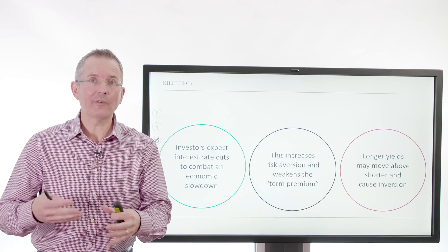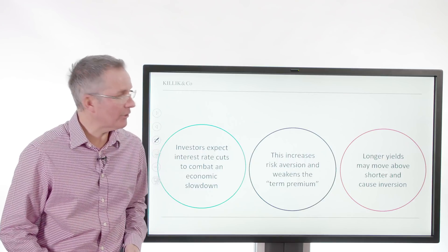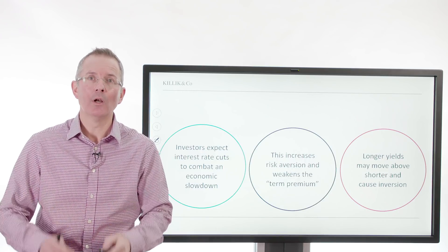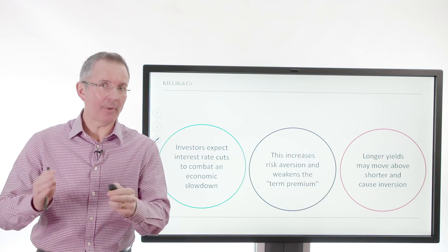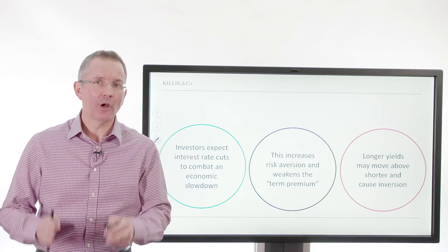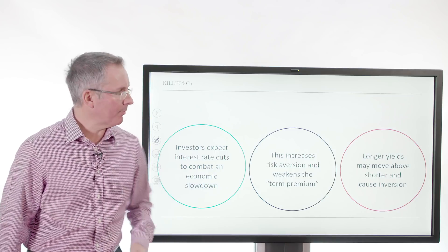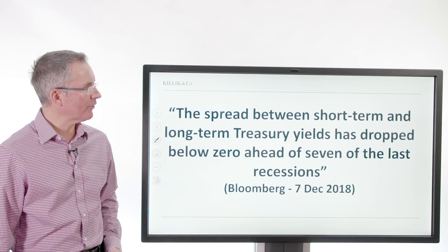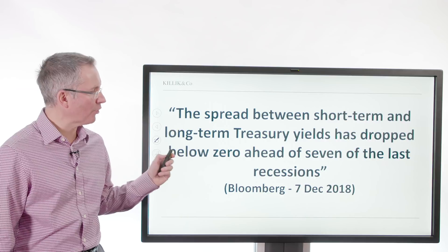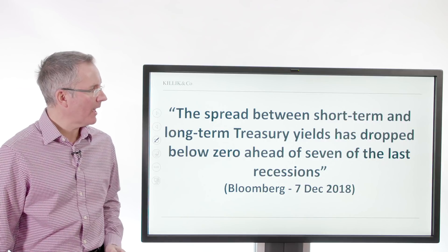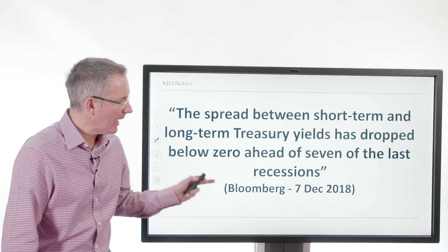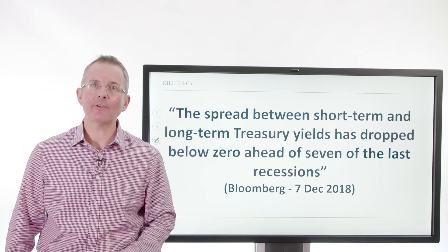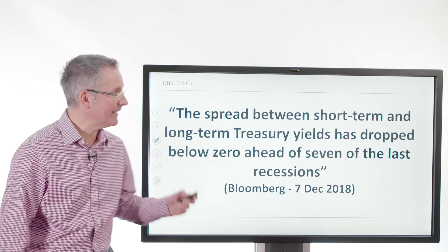All of a sudden you've got a situation where people are basically saying: if the economy heads into recession, we've got a problem. The spread between short-term and long-term Treasury yields has dropped below zero ahead of seven of the last recessions, as Bloomberg put it on 7th December 2018.